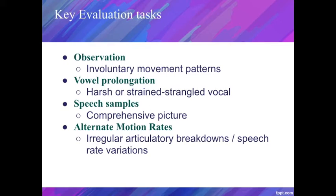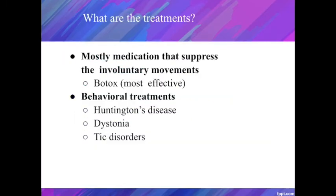Some evaluation tasks are very helpful in identifying hyperkinetic dysarthria. First is observation — SLPs need to carefully observe the associated involuntary movements because each hyperkinetic disorder has its own general patterns. Second, vowel prolongation can be used to detect harsh or strained-strangle vocal quality present in some hyperkinetic dysarthrias. Third, conversational speech and having the patient read aloud can provide a comprehensive picture including articulation, prosody, phonation, and respiration. Fourth, it is suggested that alternate motion rates (AMRs) can highlight irregular articulatory breakdowns and speech rate variations.